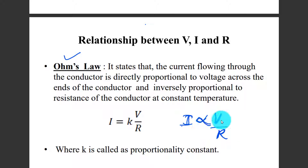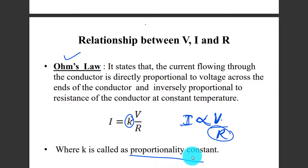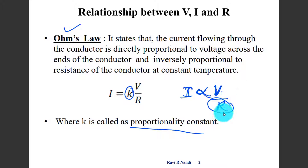Current is directly proportional to the voltage across the ends of the conductor, where K is called the proportionality constant. That is, I is directly proportional to V, and inversely proportional to R. So in any circuit, as the resistance increases, the current decreases.